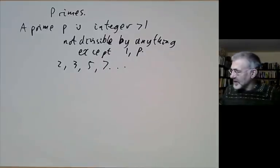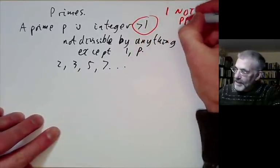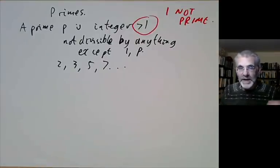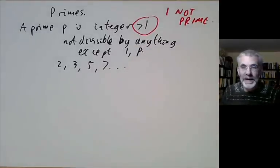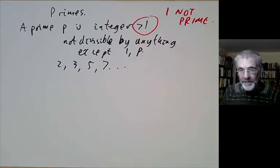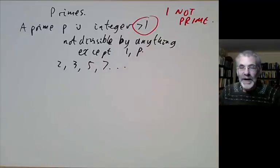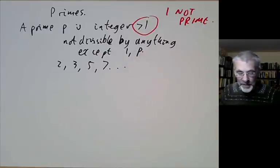Notice that we have the condition p has to be greater than 1. So 1 is not prime. The reason it's not prime is that I've defined it not to be prime, and it turns out to be very convenient to have 1 not count as a prime. Not all mathematicians agree with this. There was a mathematician called Lehner who used to compute primes a lot and he annoyed other mathematicians by counting 1 as a prime, so his counts were always off by 1 with everybody else's count.